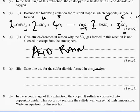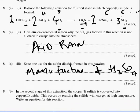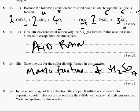State one use for sulfur dioxide formed in this reaction. There's a whole host. The only one I kind of really remember is the manufacture of sulfuric acid. Because sulfuric acid is quite a useful product. Which is other things as well. Plaster. Those kinds of things. But the one I can really remember is the manufacture of H2SO4.